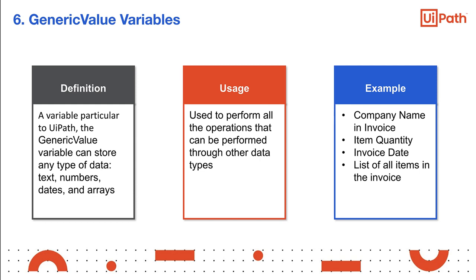The generic value variable can store any type of data. It is a proprietary variable of UiPath. It automatically converts to other types of variables to perform certain actions through an automatic conversion mechanism. The user can receive the desired outcome by carefully defining their expressions. The first element in the expression is used as a guideline for the operation that UiPath Studio performs.